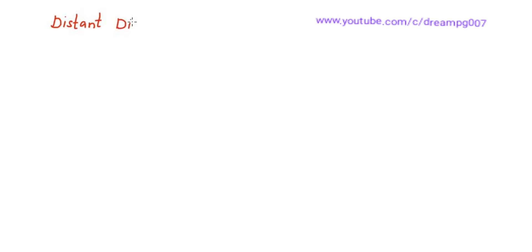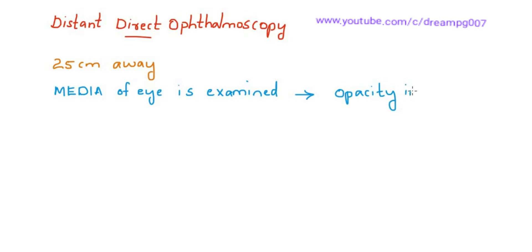There is another entity called a distant direct ophthalmoscope. It is used 25 cm away from the eye. It is used to examine the media of the eye. So opacity in cornea, lens, and the aqueous humor is observed with this distant direct ophthalmoscopy.